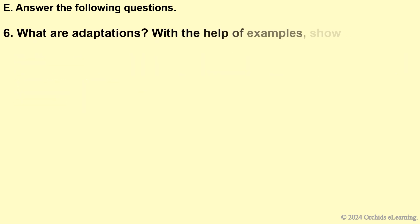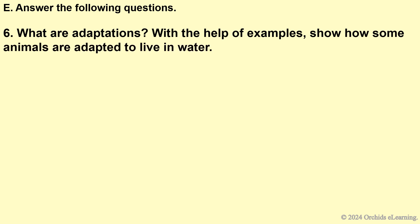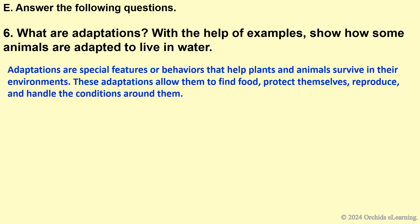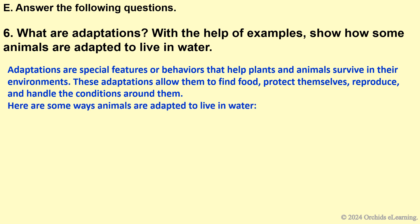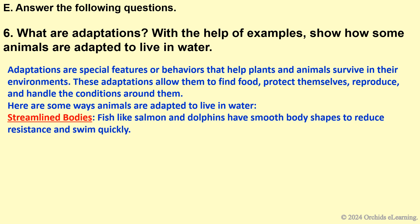What are adaptations? With the help of examples, show how some animals are adapted to live in water. Adaptations are special features or behaviors that help plants and animals survive in their environments. These adaptations allow them to find food, protect themselves, reproduce, and handle the conditions around them. Streamlined bodies: fish like salmon and dolphins have smooth body shapes to reduce resistance and swim quickly.